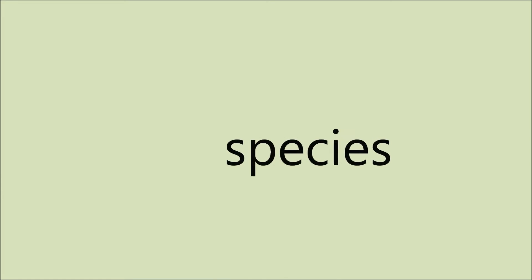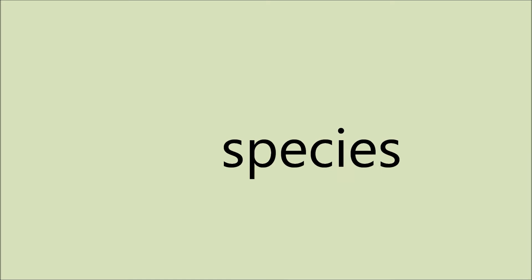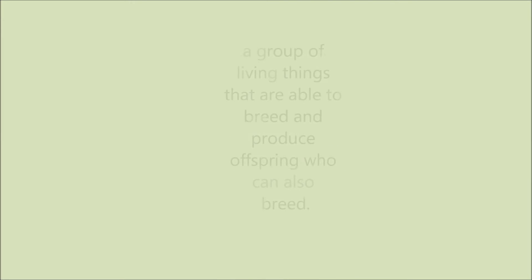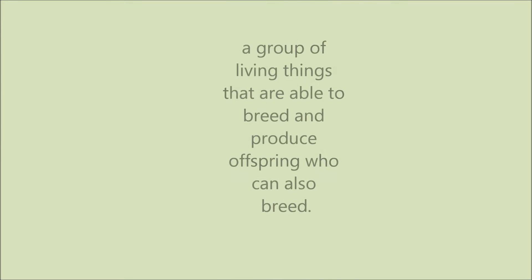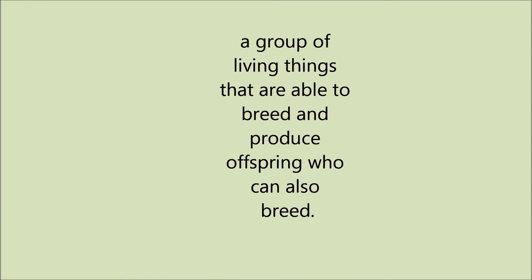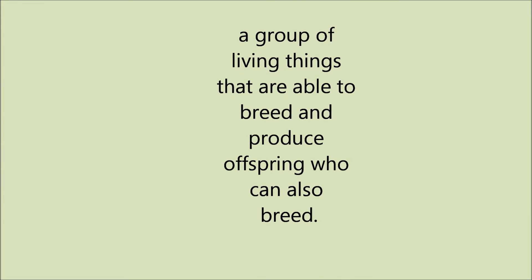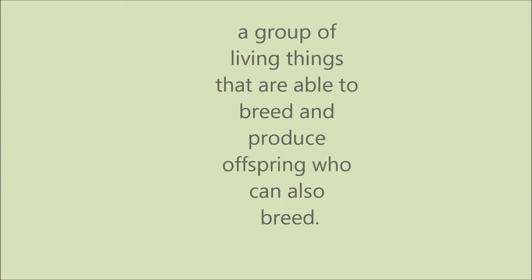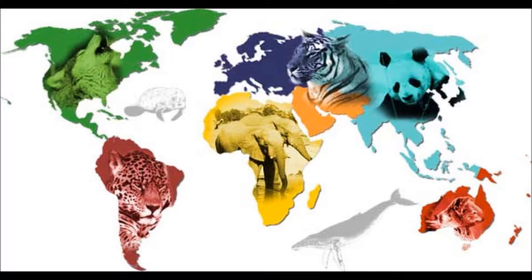The word species has a lot of meanings and concepts. The biological meaning of a species is defined as a group of living things that are able to breed and produce offspring who can also breed. Because all living things are made in such an interesting and complicated way, not all living things are able or likely to breed. And sometimes, even if they do, the offspring that results are not strong enough to survive or able to have their own offspring.